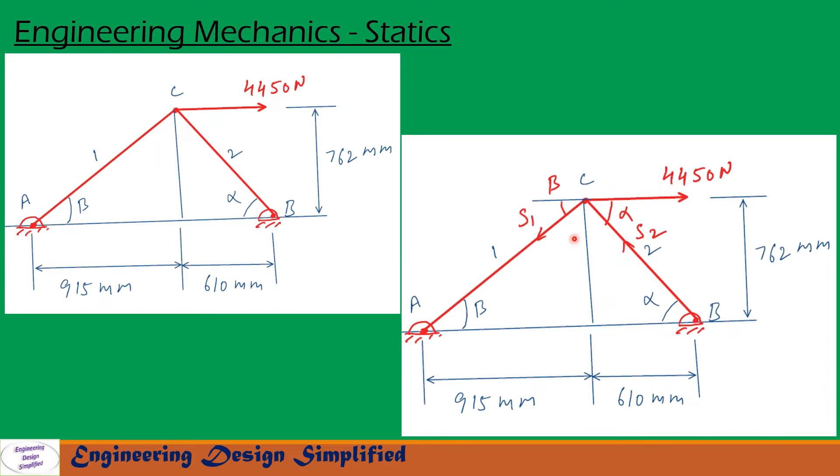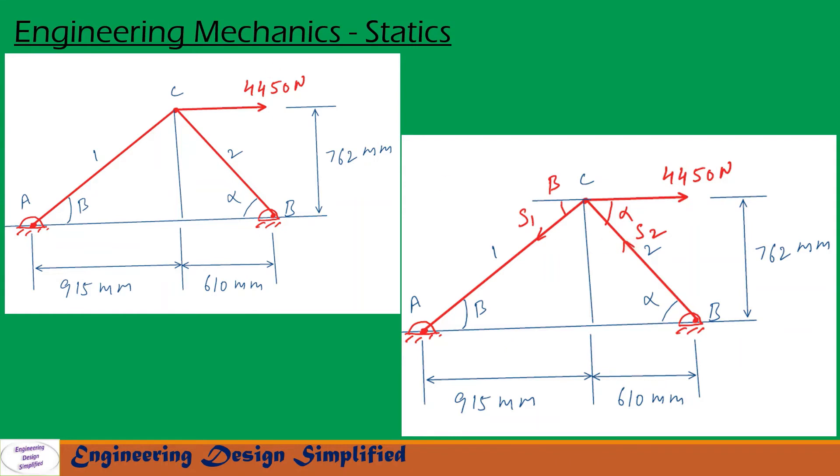Now let us see forces and reactions. This force 4450 Newton is acting horizontally towards this direction. Because of this load, there will be tension in this bar AC, so direction is shown here. And this bar BC will experience a compression, and direction is shown here. Now let us draw free body diagram at point C.